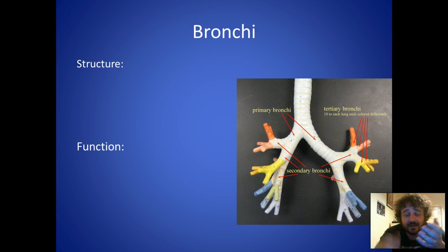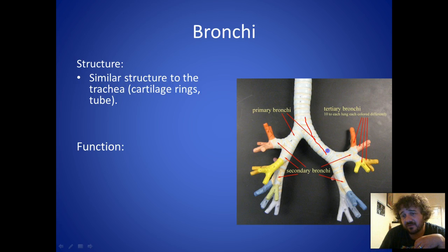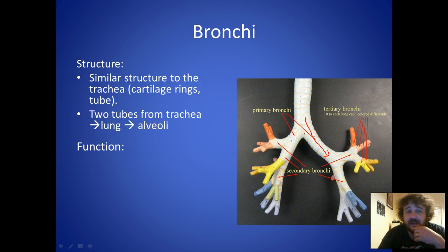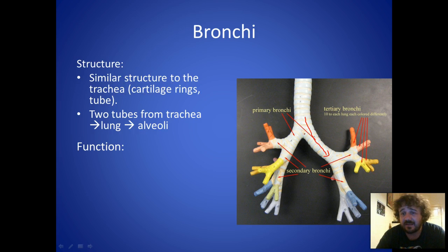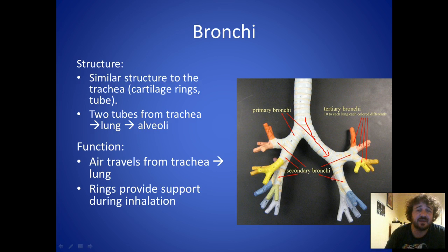Now we move on to the bronchi. The structure is similar — in fact, it's identical. If you look down here, it is just a continuation of the trachea, but this is where the trachea splits off. It is two tubes, one left and one right, and they go from the trachea into the lungs and into the alveoli. Air travels from the trachea into the lungs, and the rings provide support during inhalation because it gives you negative pressure, which would cause it to collapse in on itself.